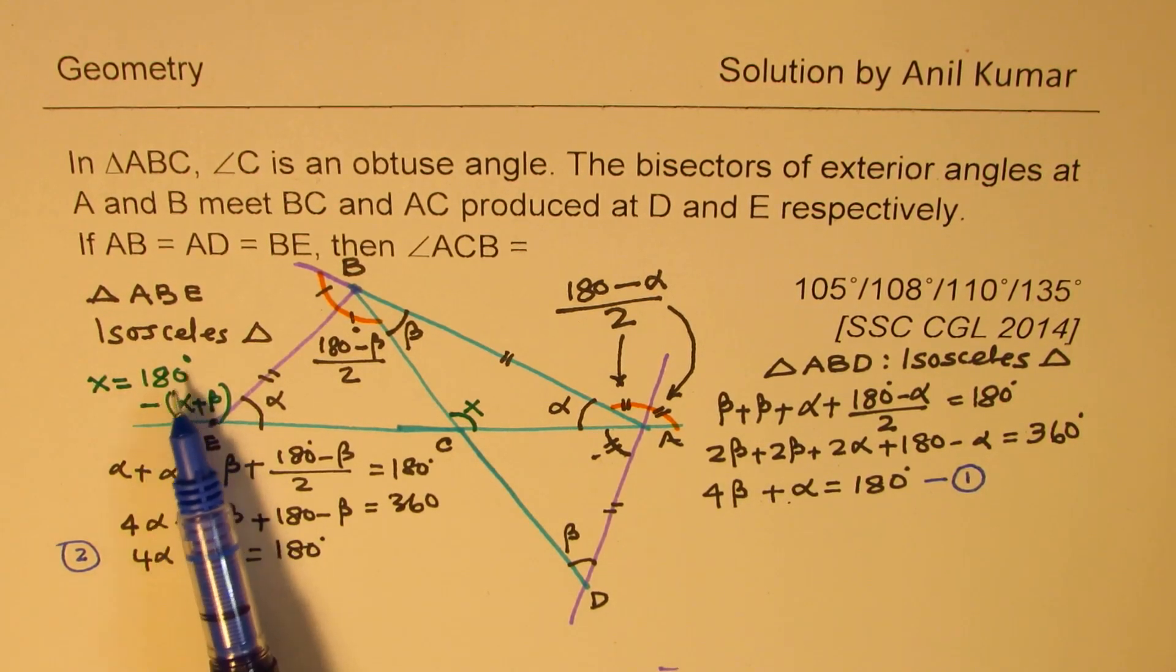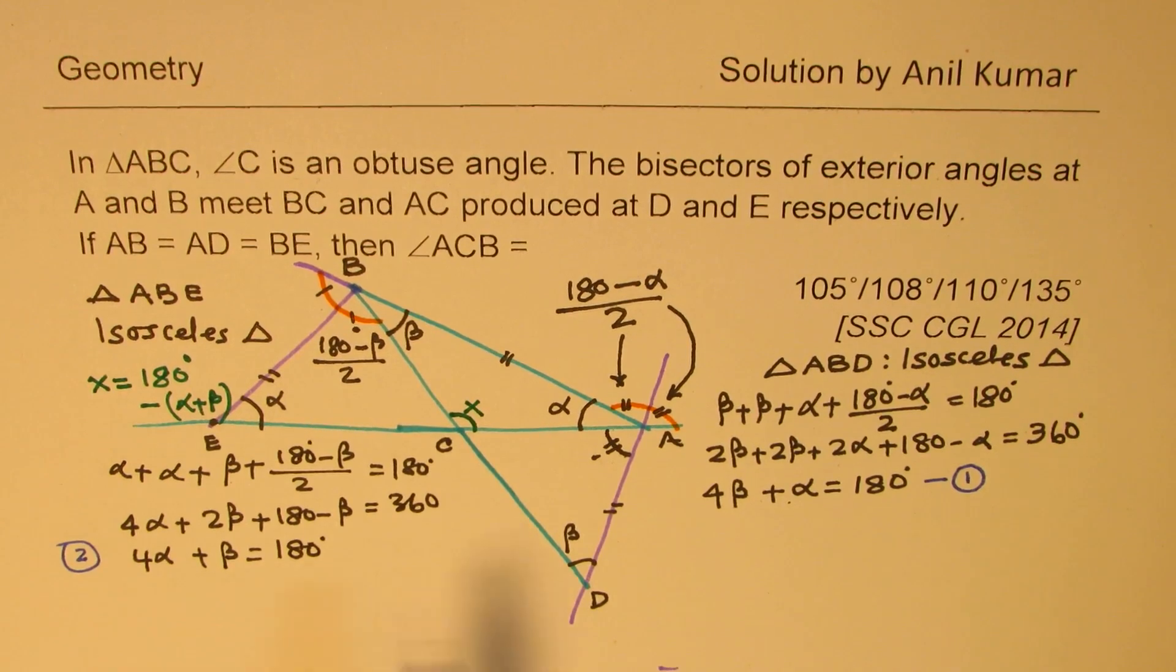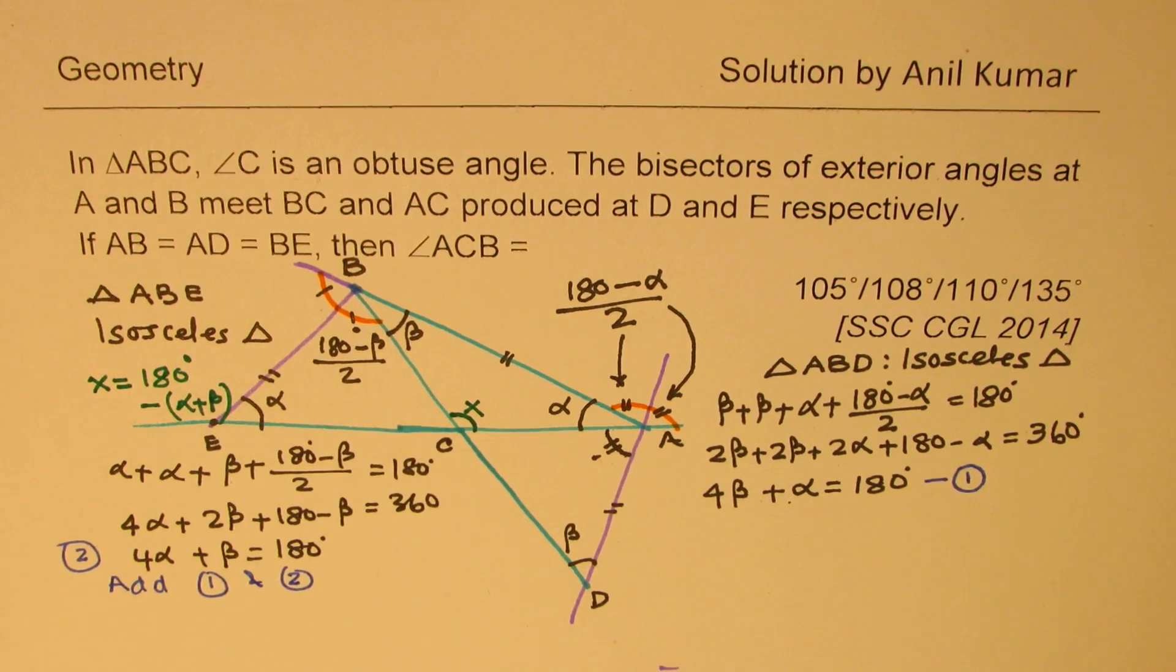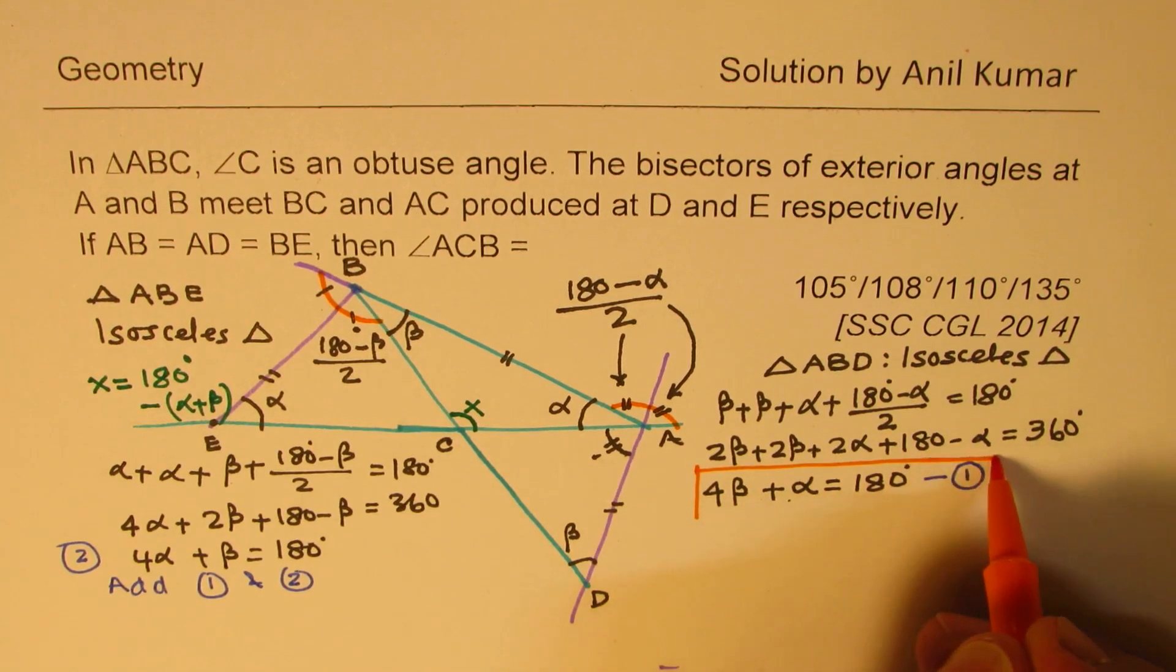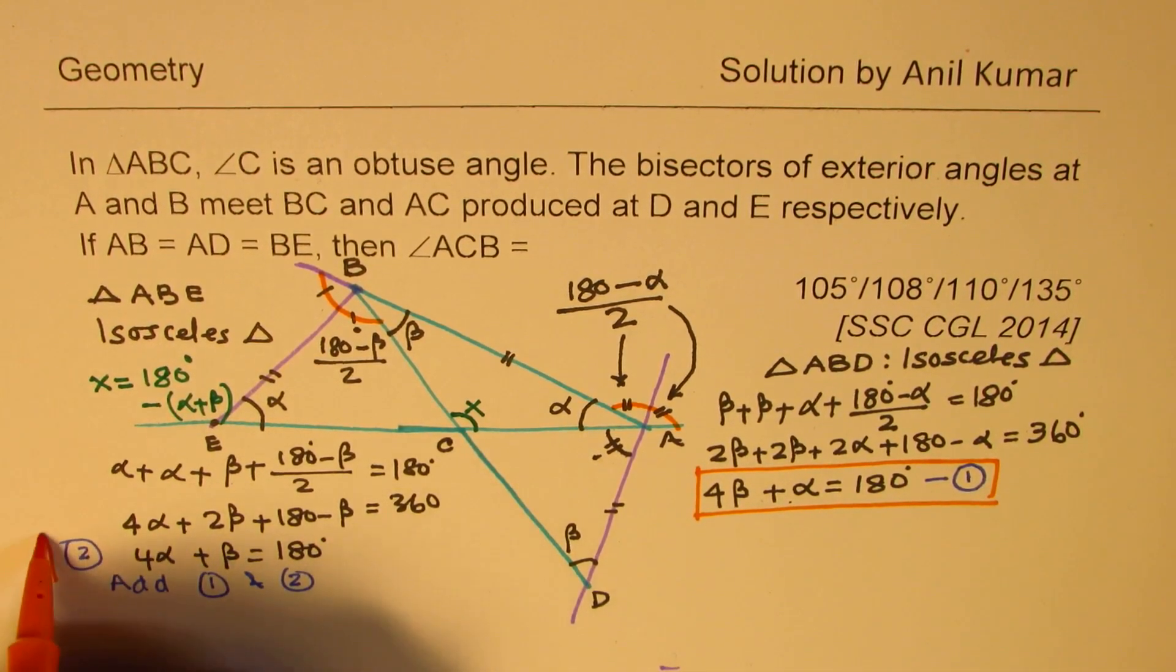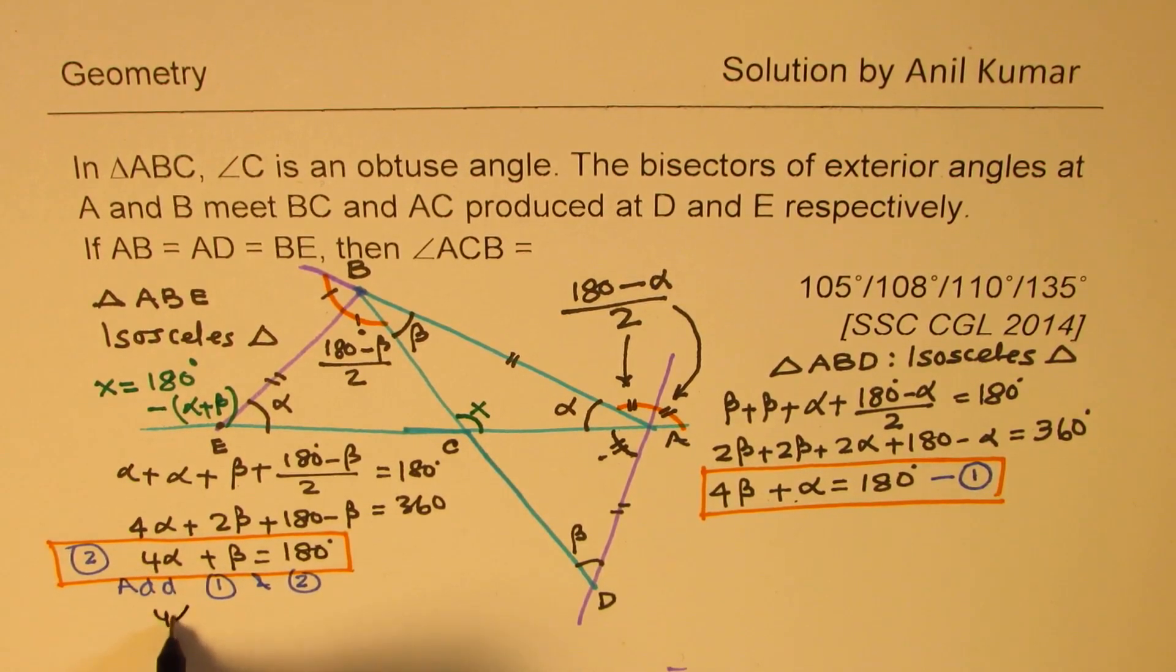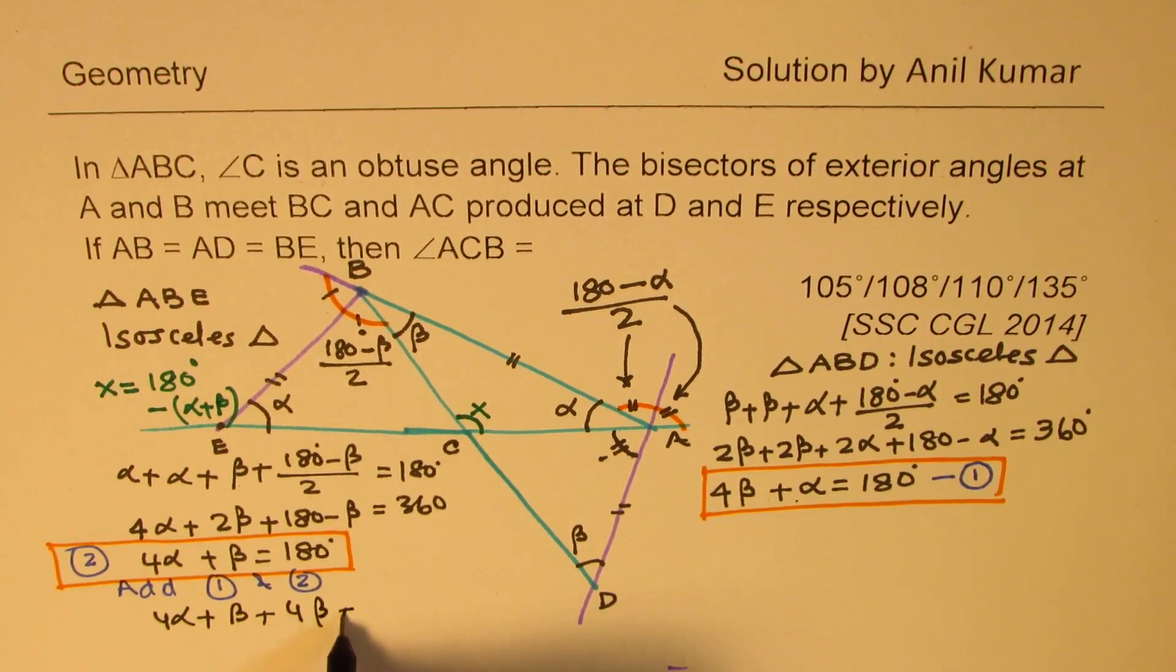Now, what we really need to find is 180 minus alpha plus beta. Do you see that? So I don't really have to find alpha and beta separately. What I can do here, and that is, I think, key in the solution, is that I can add equation one and two. So if I do that, these two equations, let's highlight our equations. So if we add these two equations, what do we get? We get 4 alpha plus beta plus 4 beta plus alpha equals to 180 plus 180.